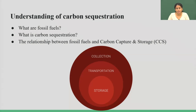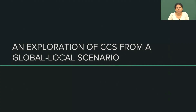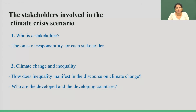The important idea here is that CCS is a mitigation technology. In the next section we will explore CCS from a global and local scenario, looking at both the global and local aspects of applying CCS as well as the stakeholders who apply it. Stakeholders are those entities which have a stake in a particular event, conversation, or topic. In the context of CCS, stakeholders include everyone who is involved in the actions of climate change.